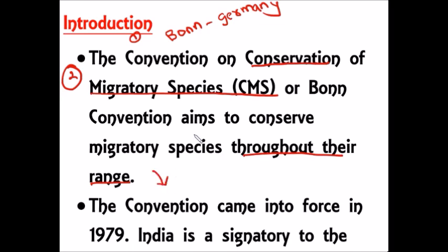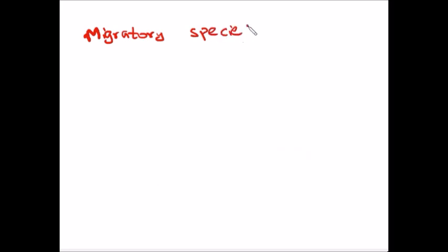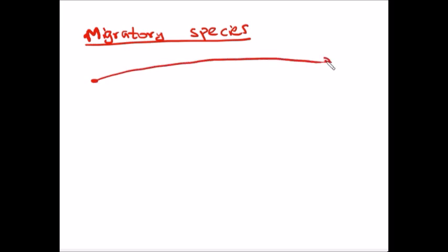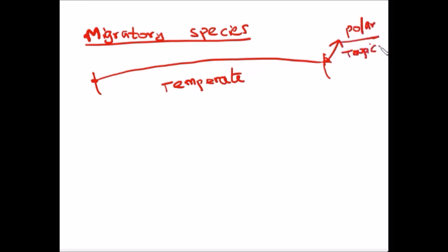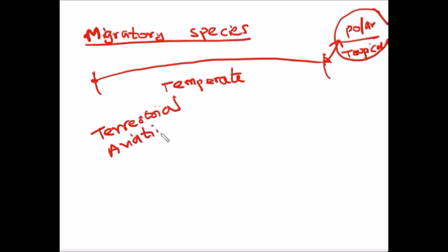Before going into the details, let's understand some basics about migratory species. Migratory species are animals that migrate from one place to another within their range — they will not go beyond it. For example, some animals need a temperate climate and cannot survive in polar or tropical regions. Similarly, birds migrate from one place to another — some start migration in polar regions and reach Africa for breeding.